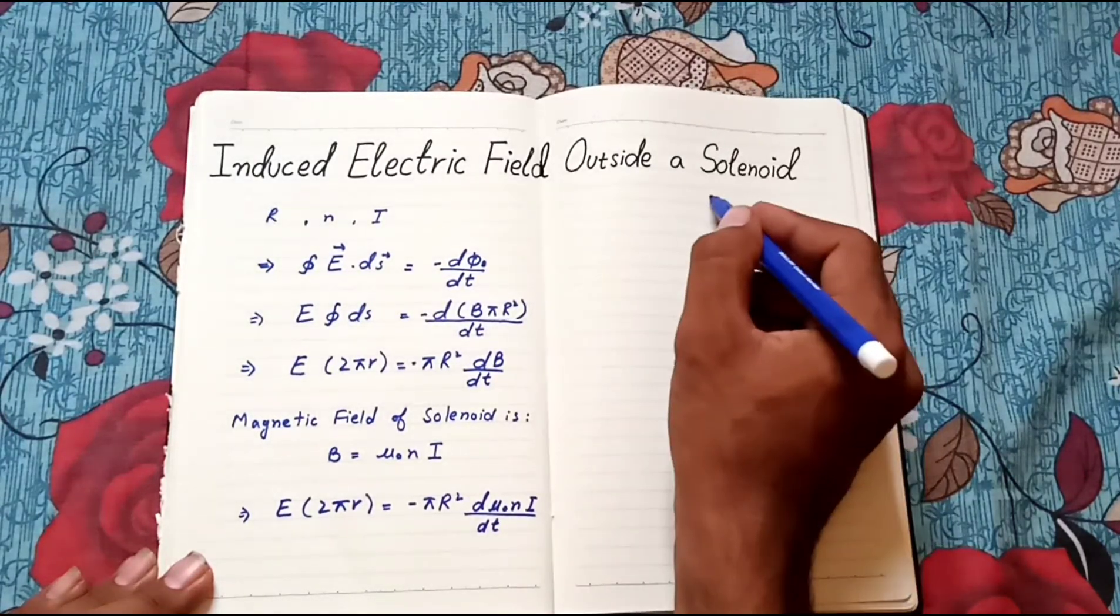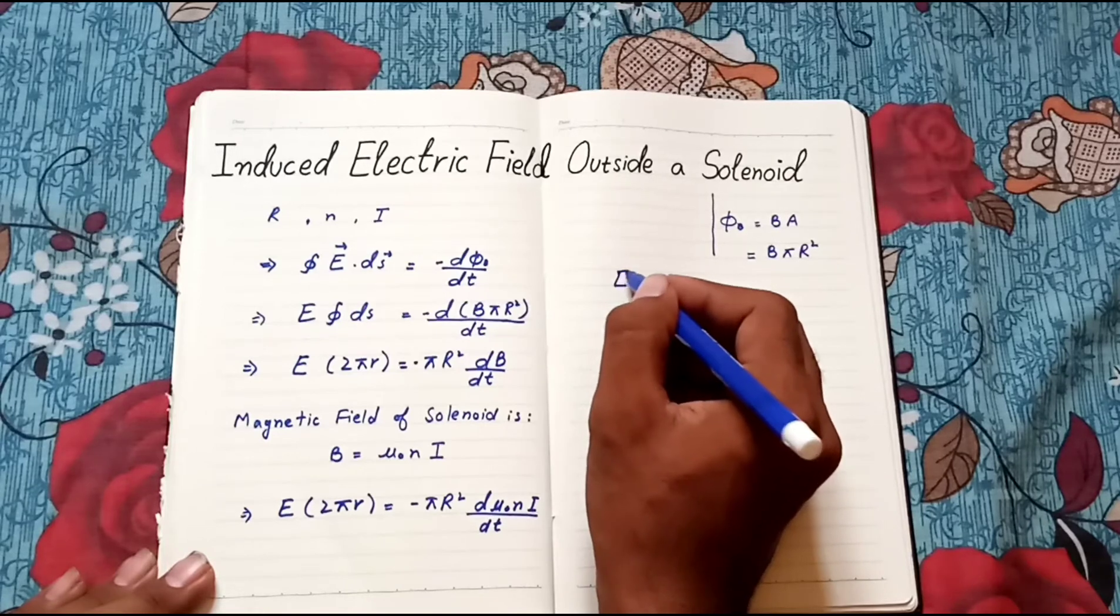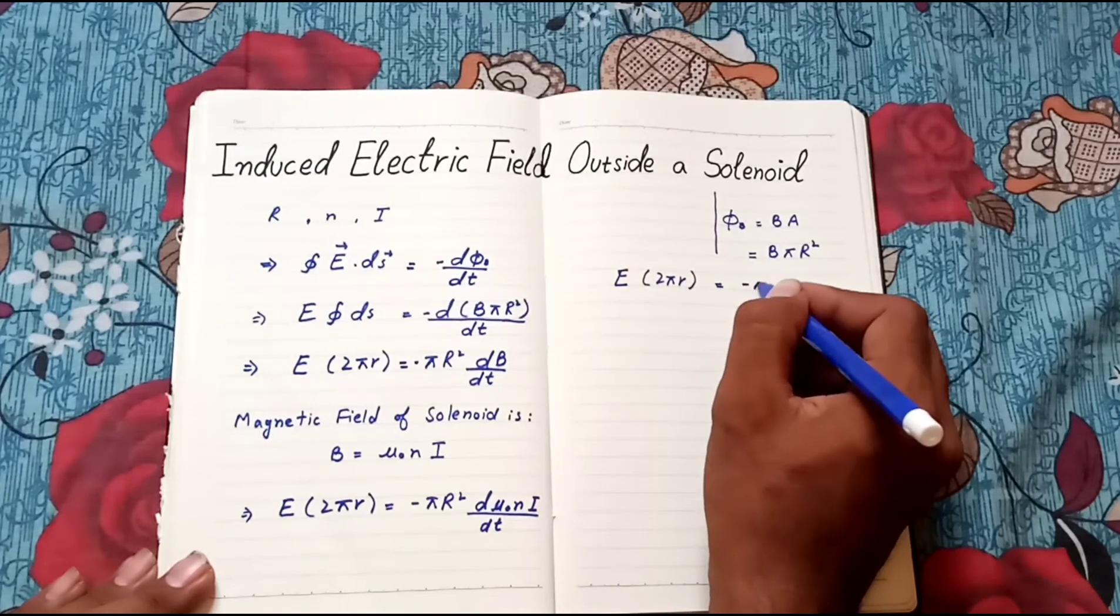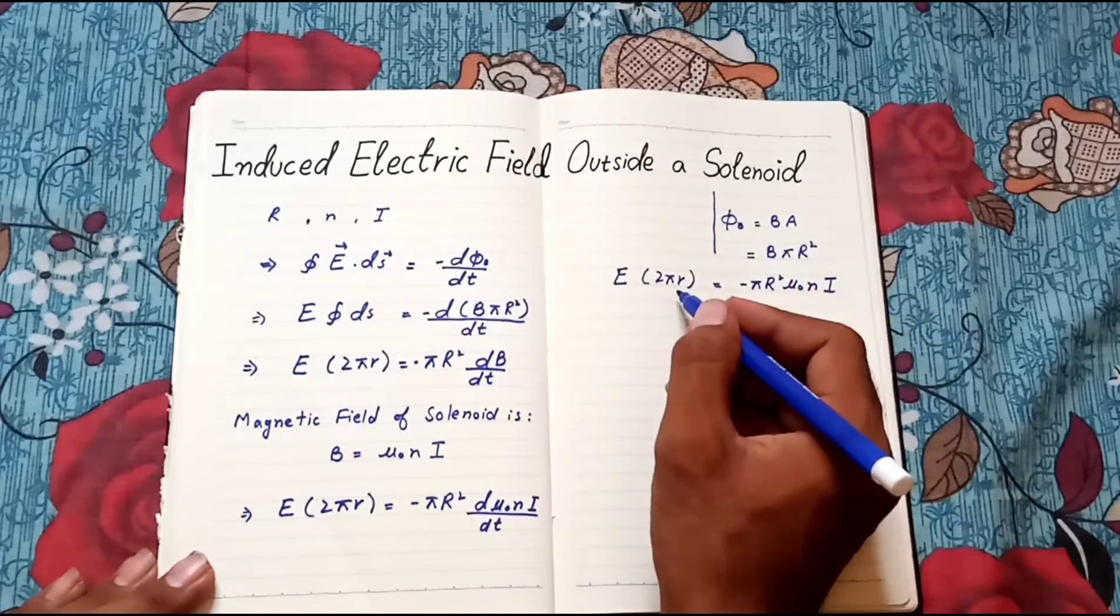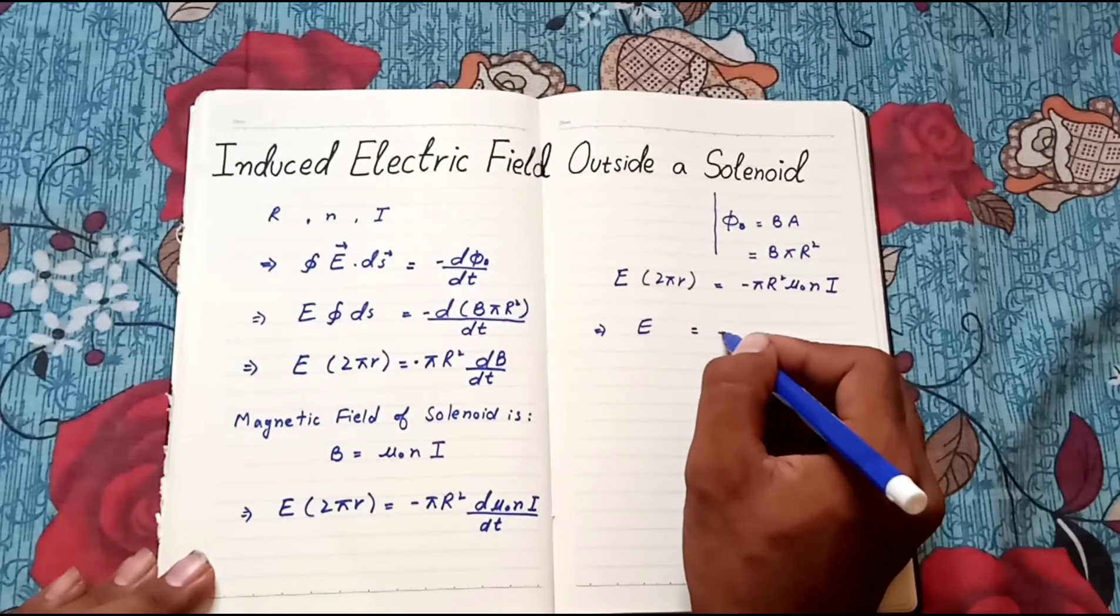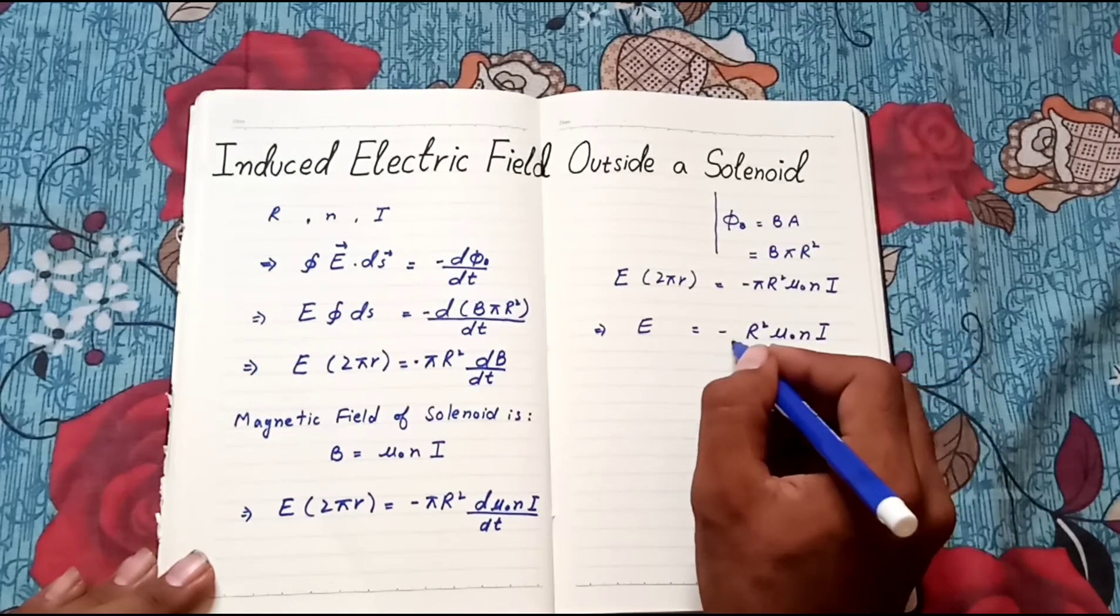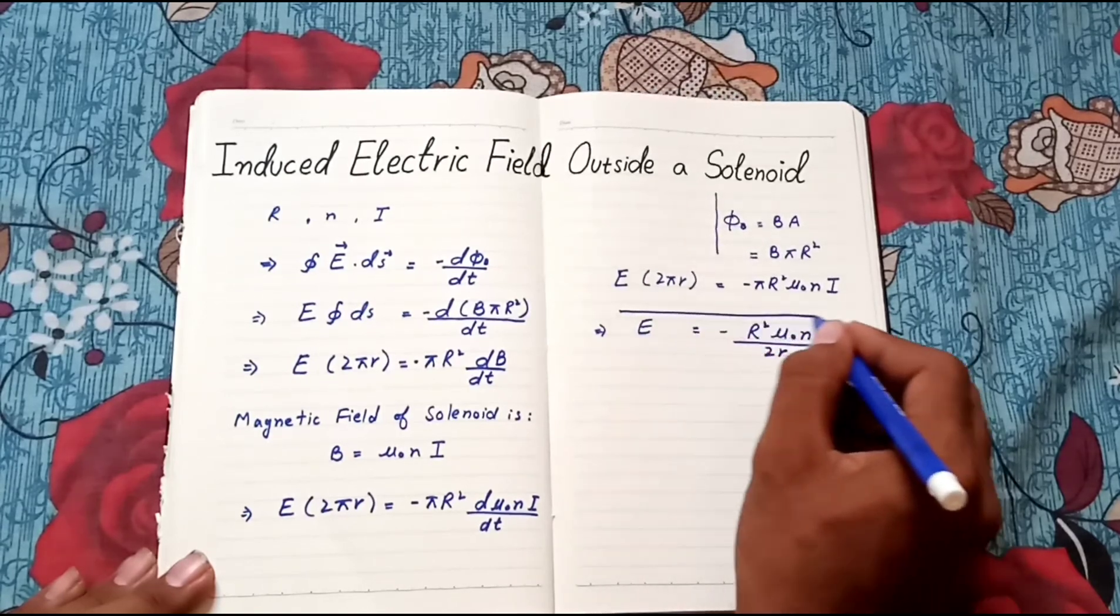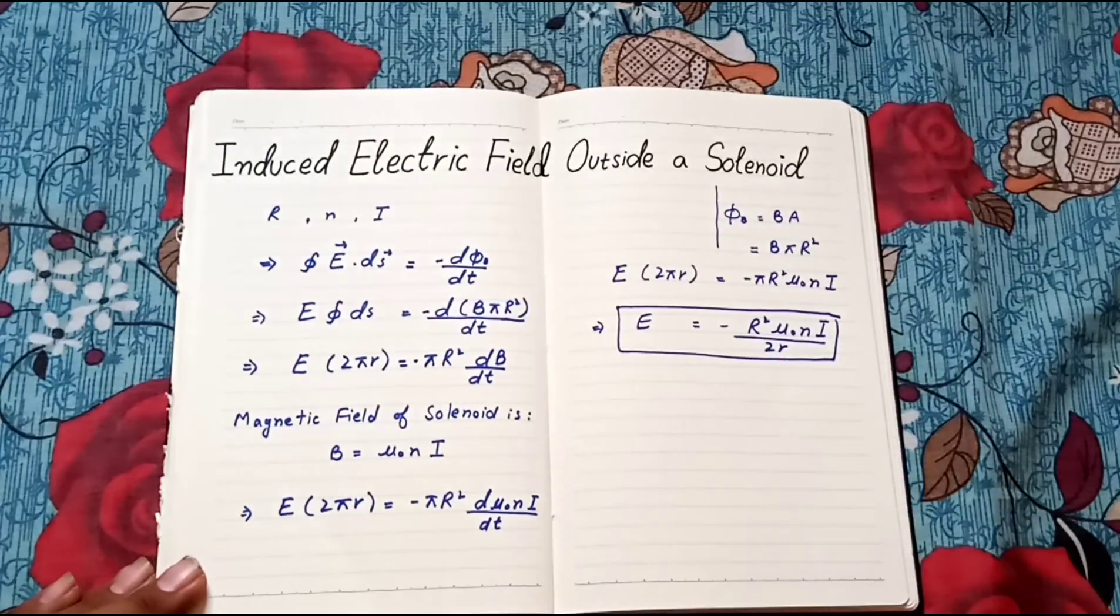So, our final equation becomes E into 2 pi r equals minus pi r squared mu naught n di/dt. This is our final equation of induced electric field outside a solenoid.